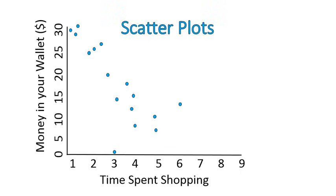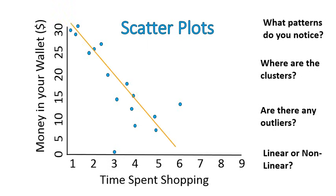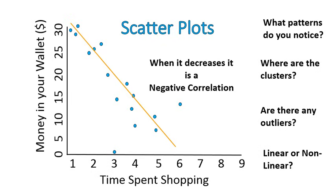Now let's look at money in your wallet versus time spent shopping. Do you notice any patterns? It's decreasing. Is this linear or nonlinear? This one is definitely linear — it's a stark decrease. We would call this a negative correlation: the longer you spend shopping, the less money you would have in your wallet. Look for clusters, look for outliers, exceptions to the rules, and make some conclusions based on the scatter plot.